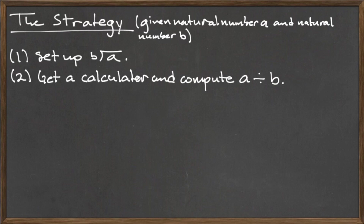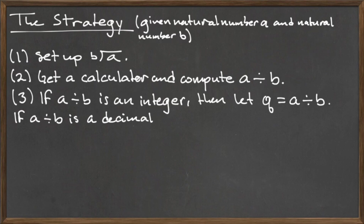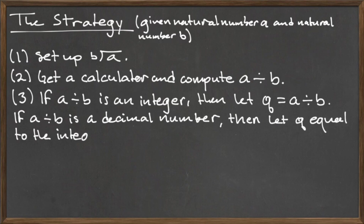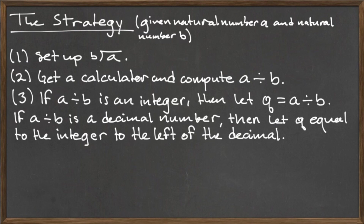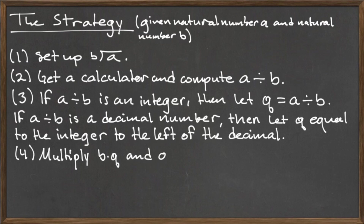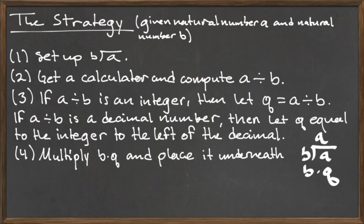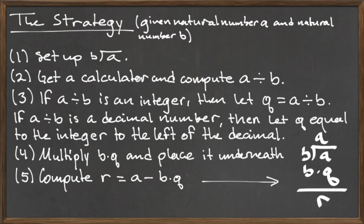The second step is what makes this strategy faster than using the division algorithm. Rather than compute the division of a by b by hand, we can use a calculator and compute a divided by b directly. If a divided by b is an integer itself, then this value is the quotient, which we place on top of the division symbol. If a divided by b is not an integer but is rather a decimal number, then the quotient is equal to the integer part to the left of the decimal — simply ignore the decimal and all numbers to the right of it. Next, we multiply b by the quotient q and place this value directly underneath the number a. Finally, we subtract b times q from a, and the number that is left is the remainder.